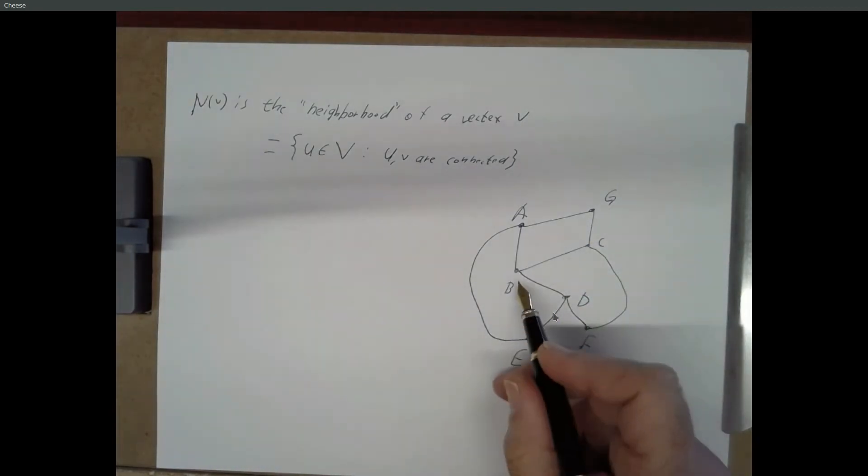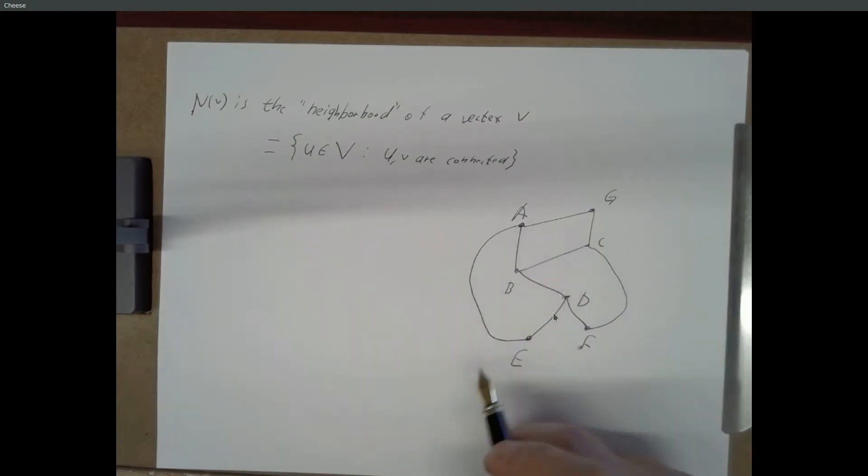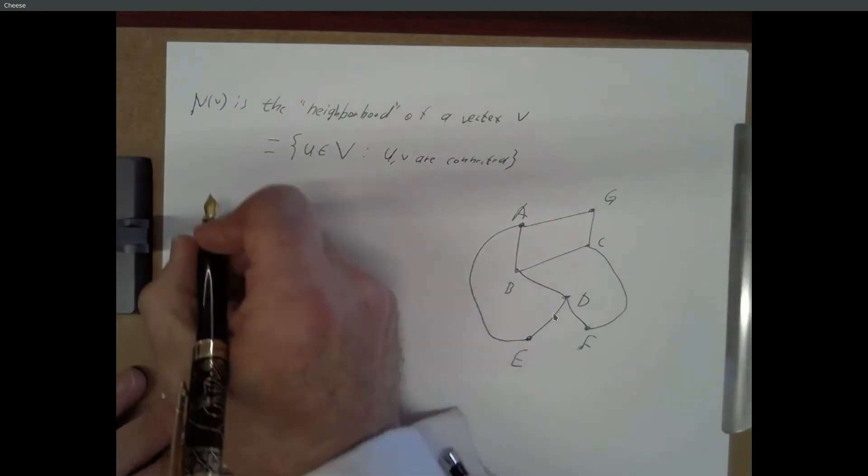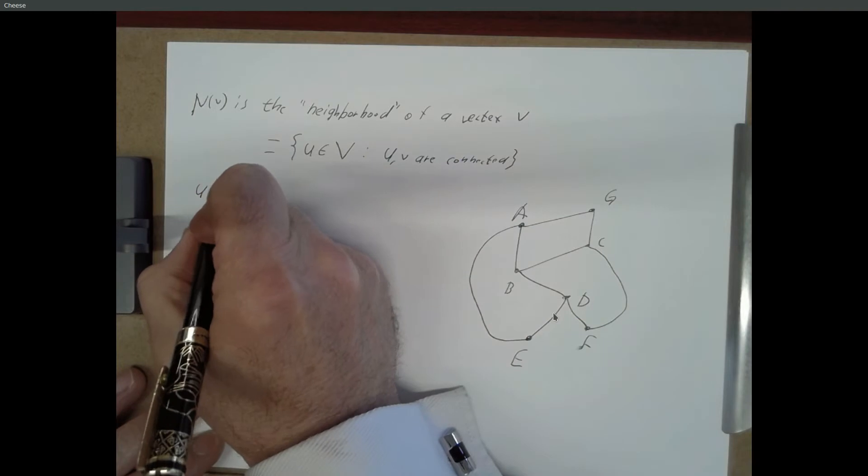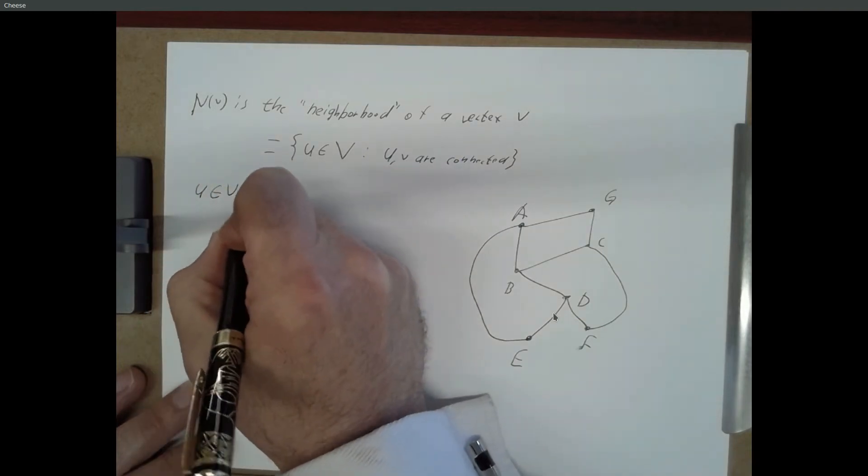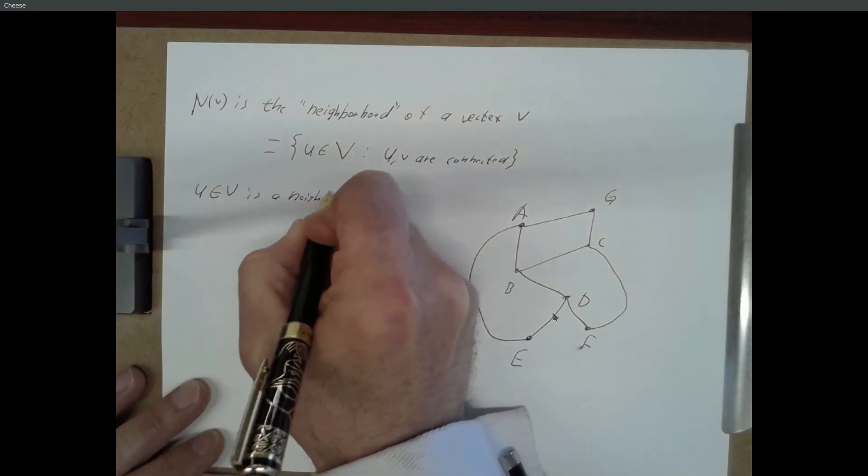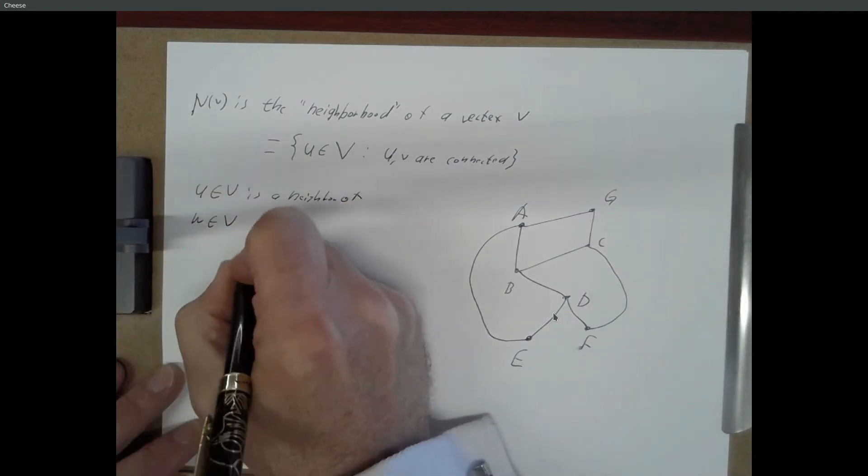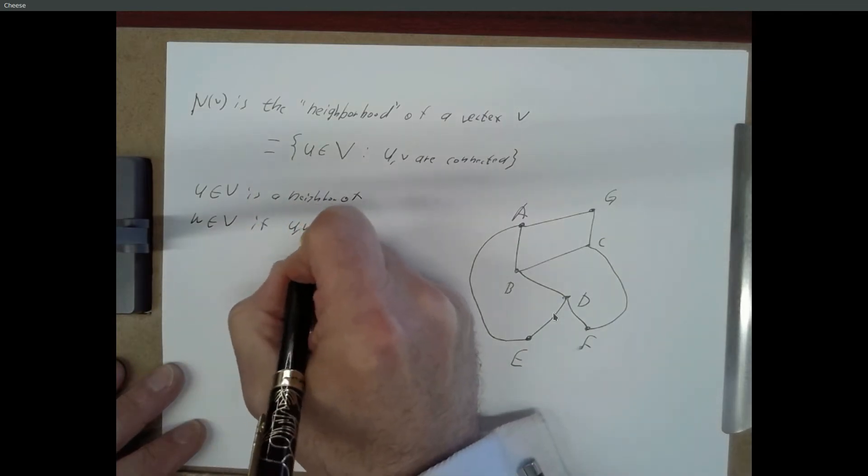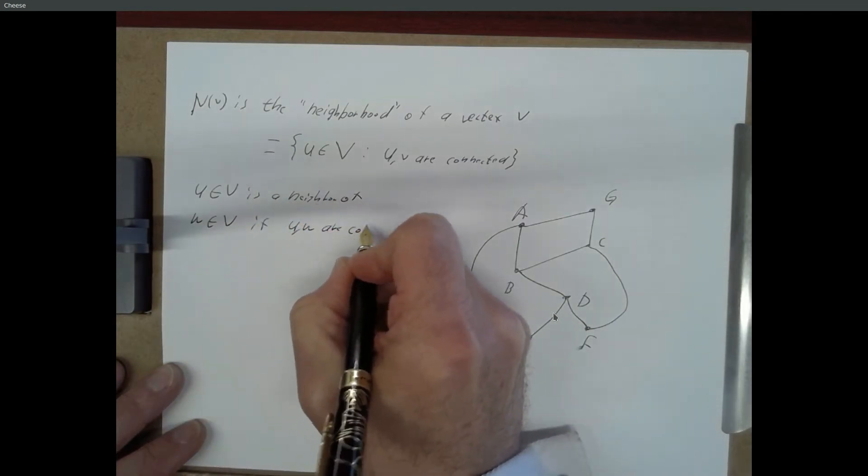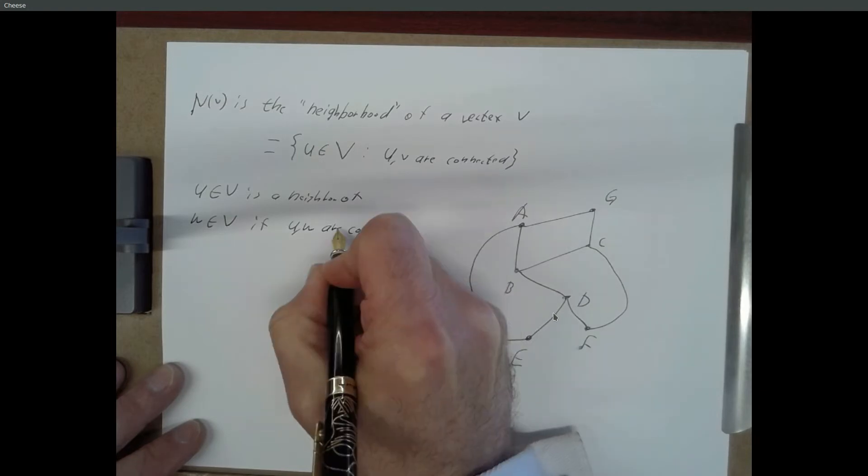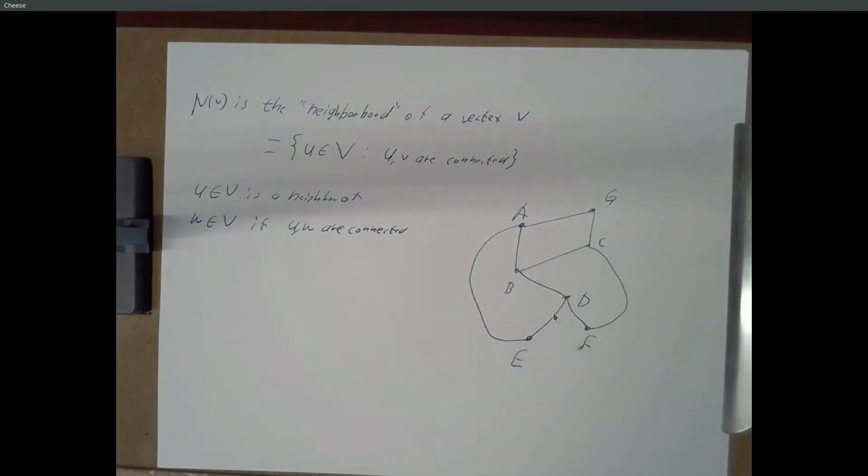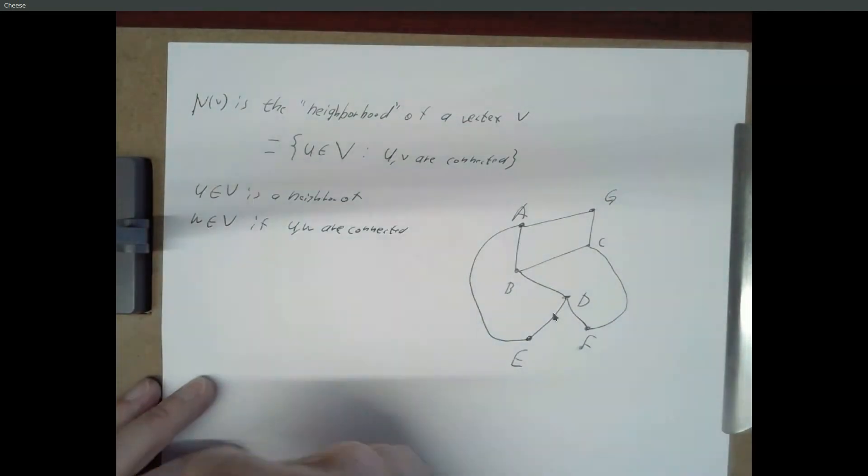And the neighborhood of B would be all the vertices connected to B. So, A, C, and D, and so on. And along with that, U contained in set V is a neighbor of W contained in V if U and W are connected. So, two vertices that are connected, we call them neighbors. And the neighborhood of V is basically the collection of all neighbors of V.